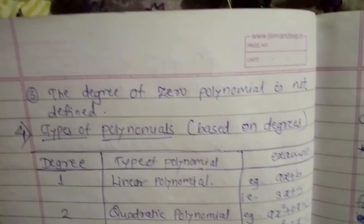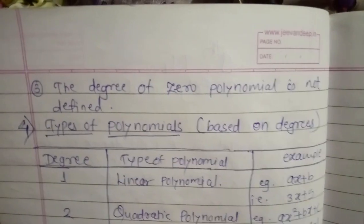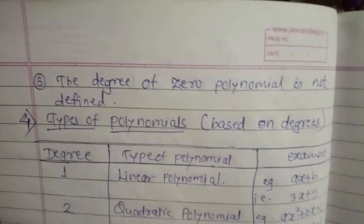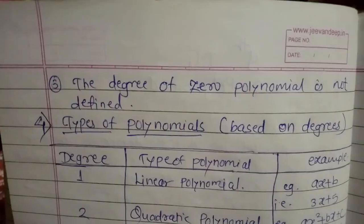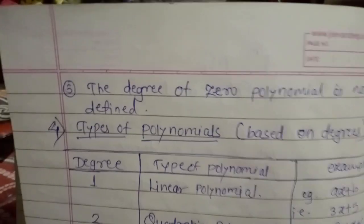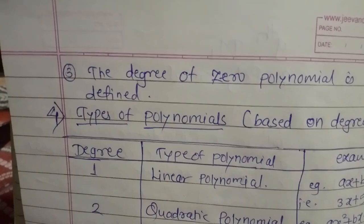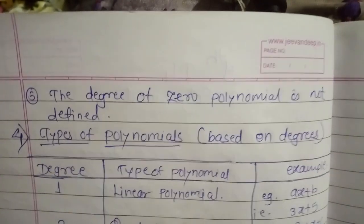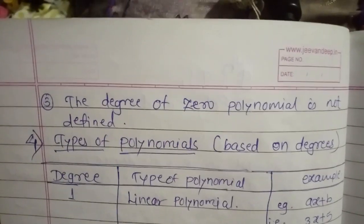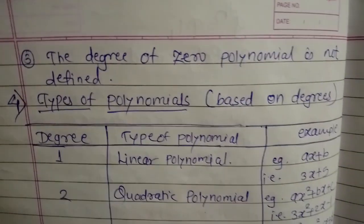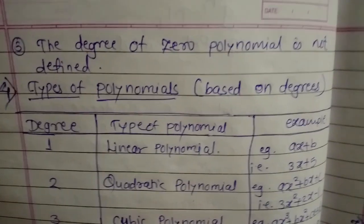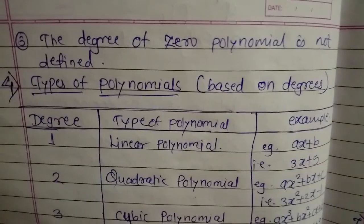The degree of the zero polynomial is not defined. If you are given the number 0 and asked for its degree, it is not defined.